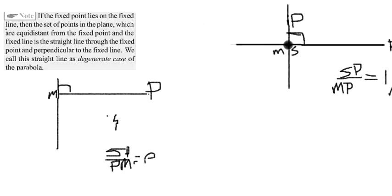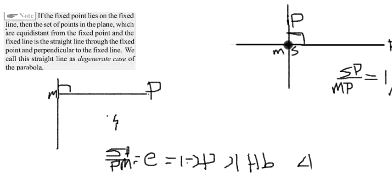This ratio is indicated by E and is called eccentricity. If this value is equal to 1, it is called a parabola. If this value is greater than 1, it is called a hyperbola. If this ratio is less than 1, it is called an ellipse. You might have known all these shapes, but this is the basic definition of conic sections.